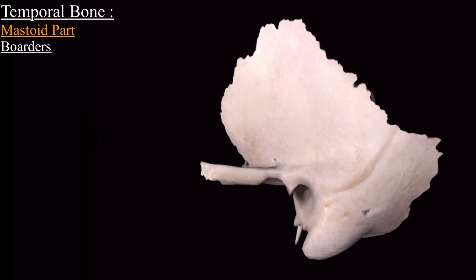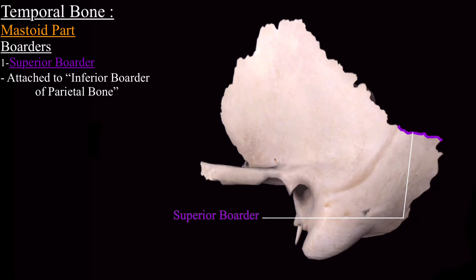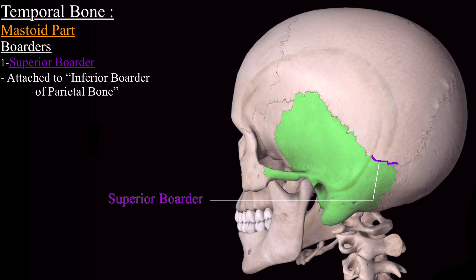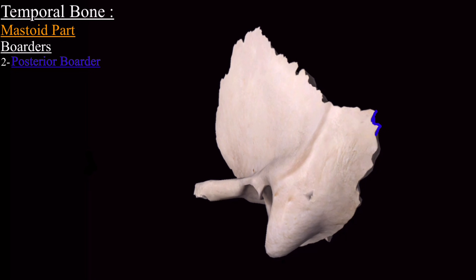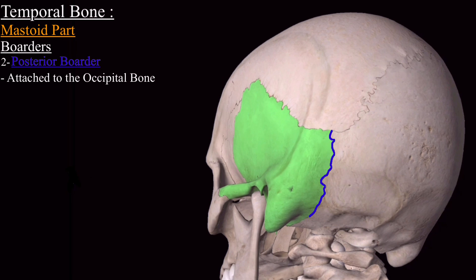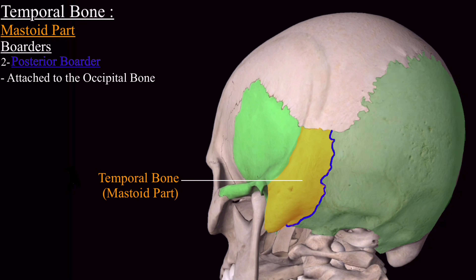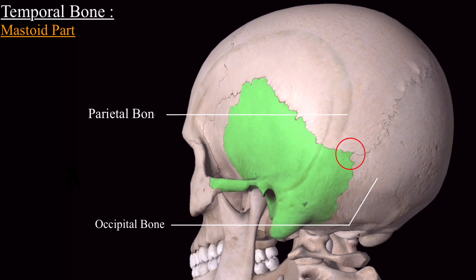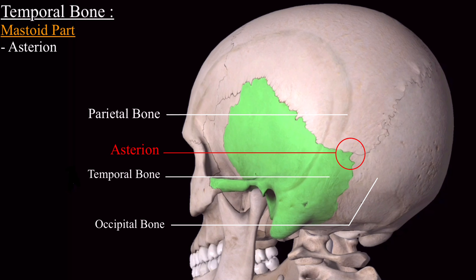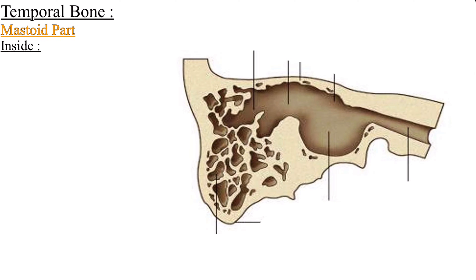The mastoid part has two borders. The superior border is attached to the inferior border of the parietal bone. The posterior border is attached to the occipital bone; the suture between them is called the occipitomastoid suture. The area where the occipital bone, parietal bone, and temporal bone meet is called asterion.